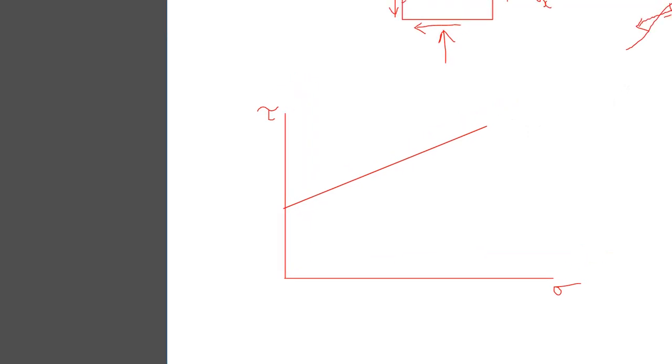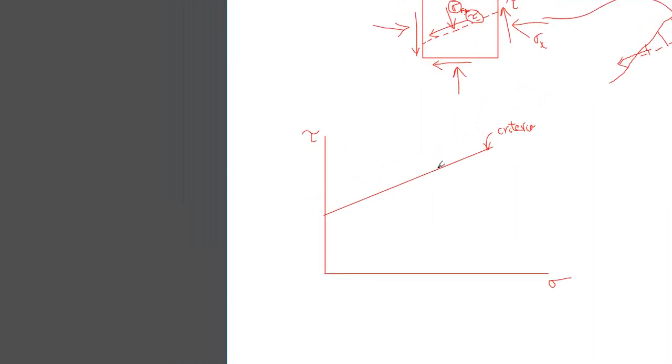Now, this straight line that we have, this is the criteria. How is this the criteria? Well, if you happen to have a combination of stresses, a combination of normal and shear stresses which is below this criteria, let's say over here, you will not have a failure.